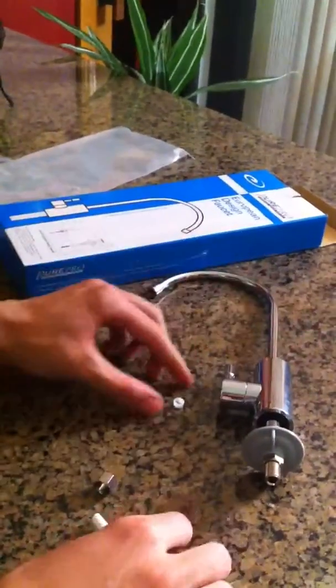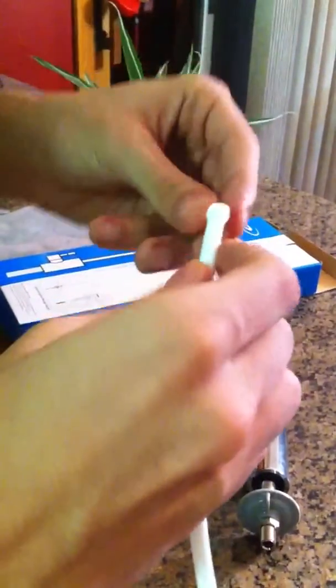Now this part here, this little white piece, you want to make sure that the larger hole is where the tubing goes into. Make sure it has a firm grip.